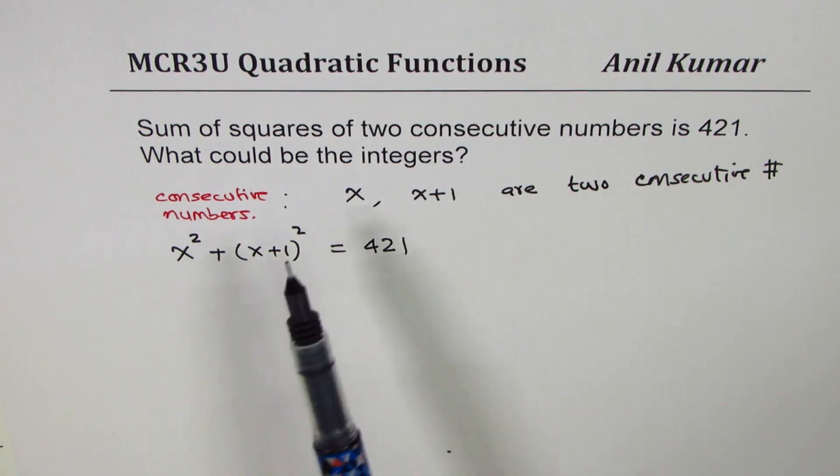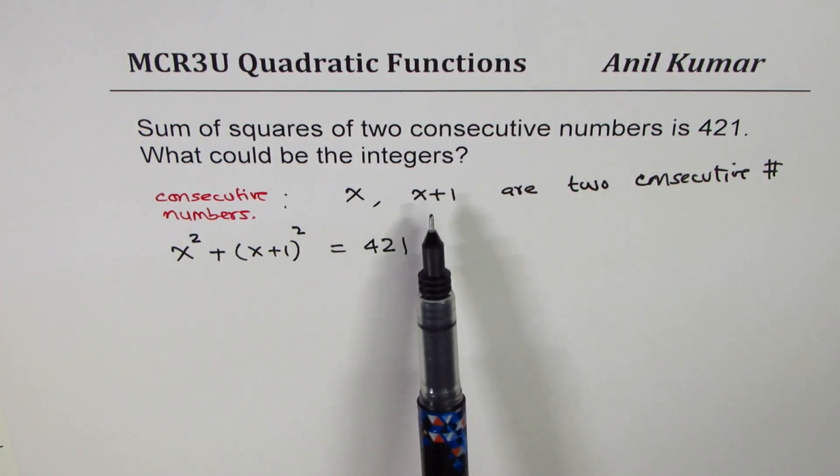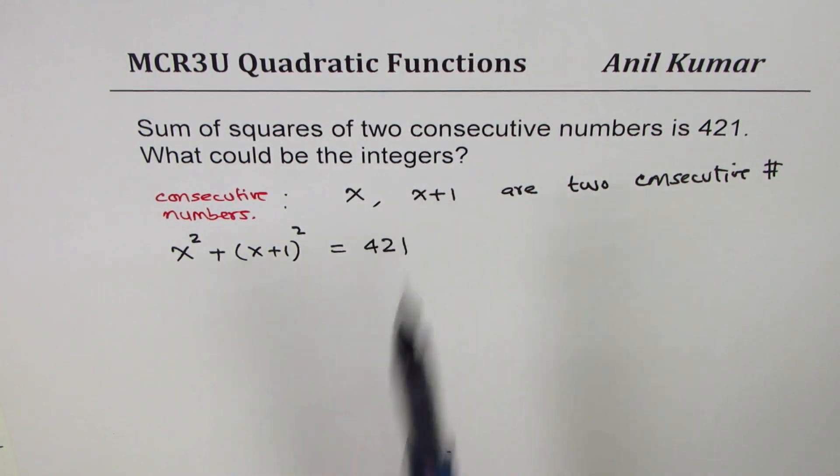So that gives you an equation. Solving this equation we can find the value of x, and then when we add one to it we get the other number. So that is how it can be solved. I hope that's absolutely clear. You can attempt and then look into my solution.